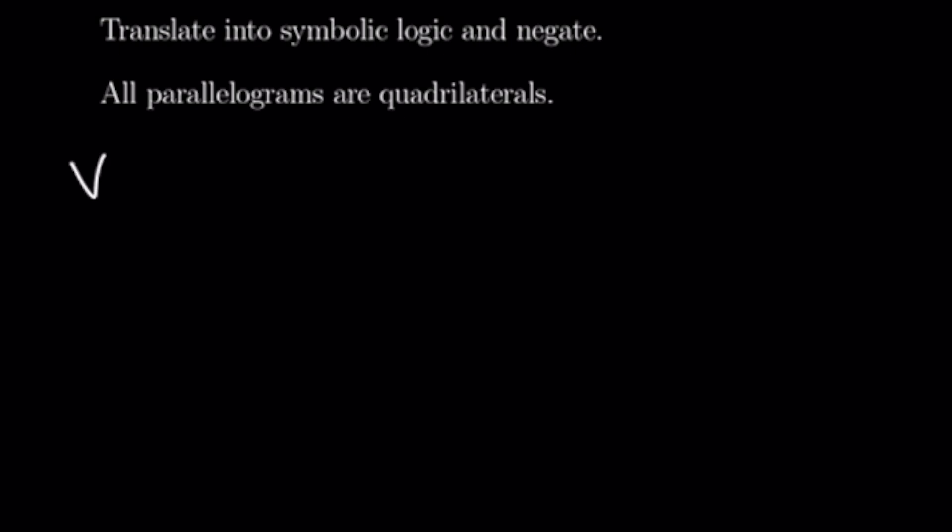This one says: all parallelograms are quadrilaterals. For the sake of this problem I'm going to represent the set of parallelograms as capital P and the set of all quadrilaterals as capital Q, to get this into symbolic language. So another way of writing this would be: for all p in P, or for every parallelogram in the set of parallelograms, p is in Q — in other words, any arbitrary element of the set of parallelograms is also a quadrilateral.